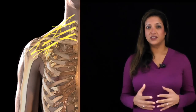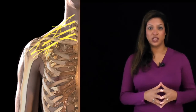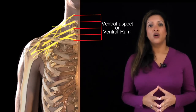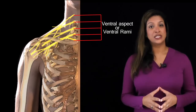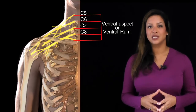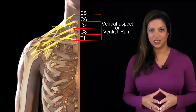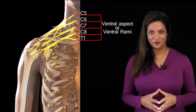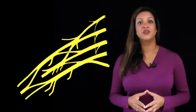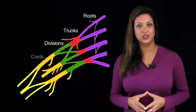The brachial plexus is formed by the union of the ventral rami of nerve roots C5, C6, C7, C8, and T1. There are different sections of the brachial plexus: the roots, the trunks, the divisions, and the cords.